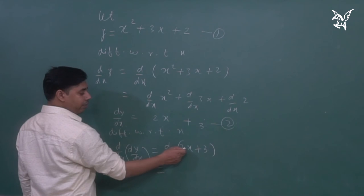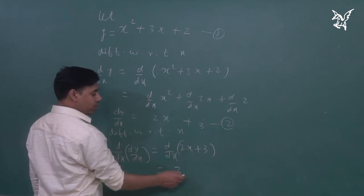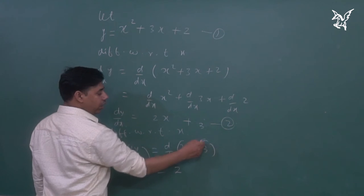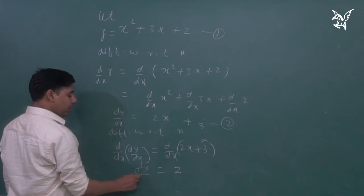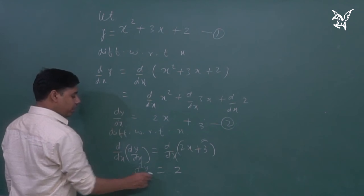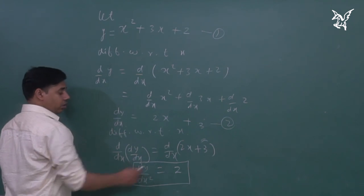What will happen? 2x will become 2, because x will become 1. And 3 is a constant quantity, equals to 0. So, this is finally 2. And we can write this as d2y by dx squared. Double derivative here, which is a constant quantity.